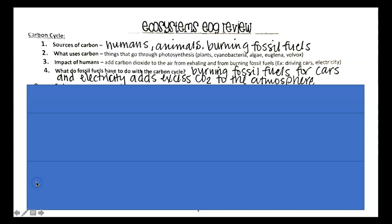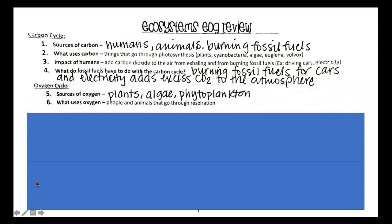The next cycle of matter is oxygen cycle. So sources of oxygen are going to be plants, algae, phytoplankton, things that are photosynthetic.